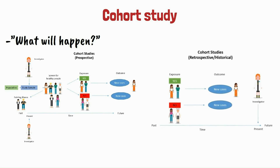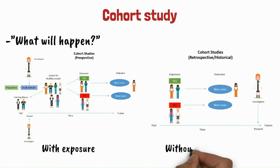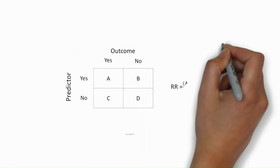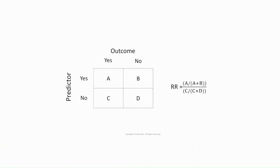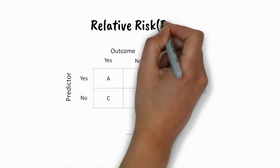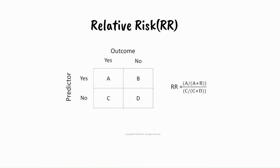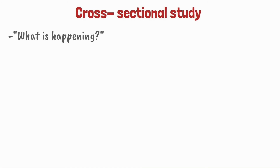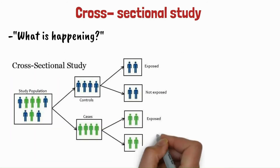Cohort study — this study asks 'what will happen?' It is observational and prospective. It compares two groups: one with the exposure and the other without exposure, looking to see if exposure increases the likelihood of disease. It measures relative risk (RR).